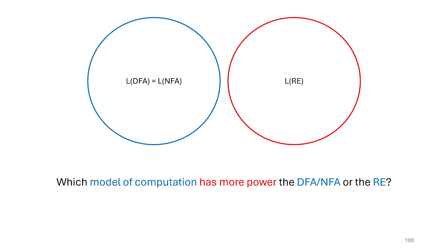So far we've defined the regular languages as those languages equivalent to the languages that can be solved with a DFA or an NFA. We proved in a previous video that NFAs and DFAs are of equal power, so this set is the same. Now we've introduced a new model of computation called a regular expression, and since regular languages and regular expressions share the name 'regular' — spoiler alert — we're going to show that these are the same class as well.